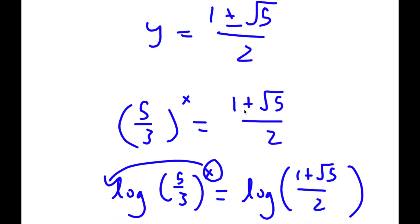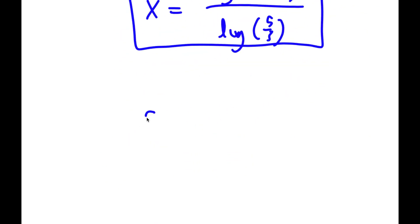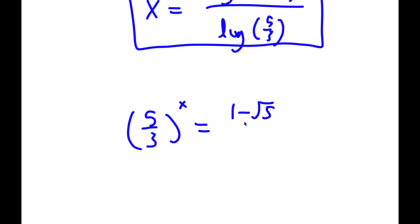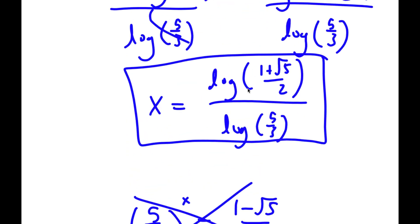For the case 1 minus the square root of 5 over 2: I have 5 over 3 to the power of x equals 1 minus the square root of 5 over 2. Well, 1 minus the square root of 5 is going to be a negative number, and you can't raise a positive number to an exponent and get a negative number. So this case is invalid, and the previous expression is my only solution.